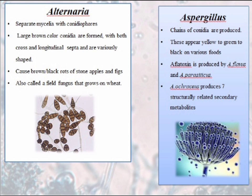Aspergillus. Chains of conidia are formed in this case. They appear yellow to green to black on various food items. Aflatoxin is produced by Aspergillus flavus and Aspergillus parasiticus. Aspergillus ochraceus produces 7 structurally related secondary metabolites.